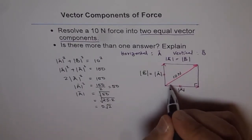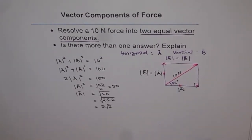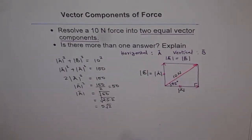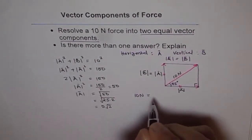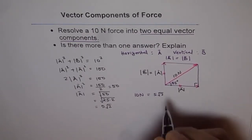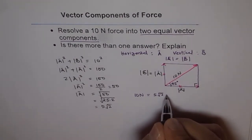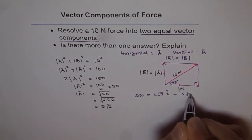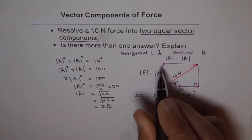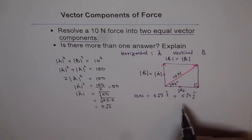Since this is a square, we know the angle formed will be 45 degrees. So the components make 45-degree angles. We can write the 10 Newton force as 5√2 in the x-direction (unit vector î) plus 5√2 in the y-direction (unit vector ĵ), where ĵ is the vertical component. So that could be one answer to this question.